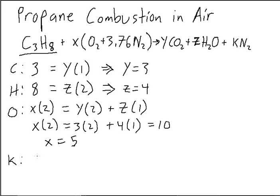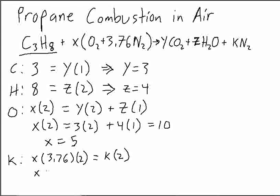And then to find K for the N component, we know we have X times 3.76 times 2 is equal to K times 2. So 5 times 3.76 is equal to K, so K is equal to 18.8.